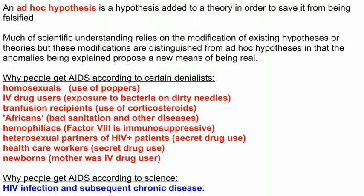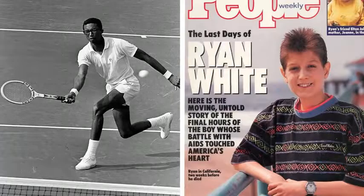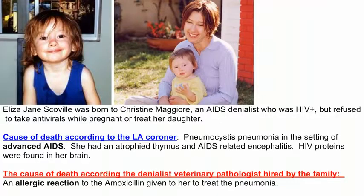The AIDS denialists often use a strategy that is very prevalent in other areas of pseudoscience called the ad hoc hypothesis. Ad hoc means 'for the purpose.' These fallacious arguments are constructed on the spot to gloss over unexpected or unwelcome observations with any explanation that avoids conceding a failure. For example, many denialists insist that AIDS is caused by chemical immunosuppression, especially by amyl nitrate or poppers. When cases are seen in normal, healthy heterosexuals, they begin to invent explanations — the person was a secret homosexual, or took IV drugs, or was exposed to a chemical and didn't realize it. Anything to avoid admitting that their explanation is insufficient to explain the origin of the disease.